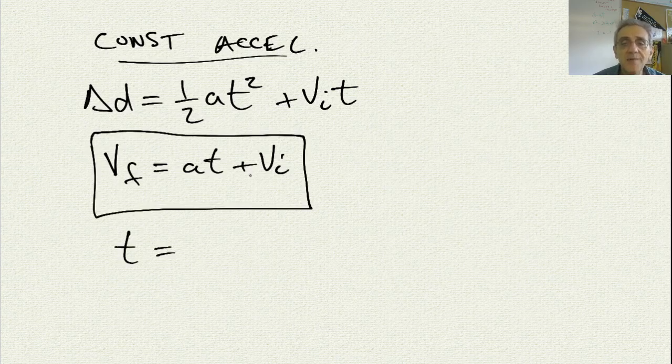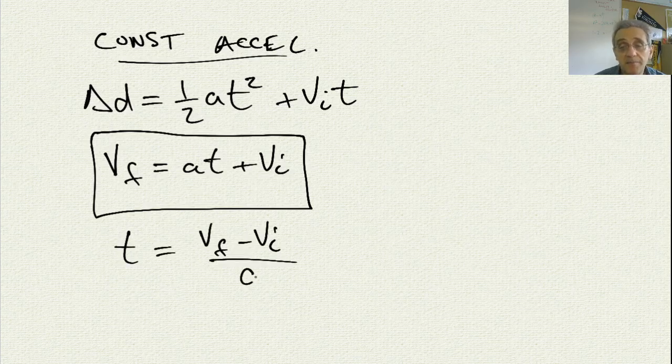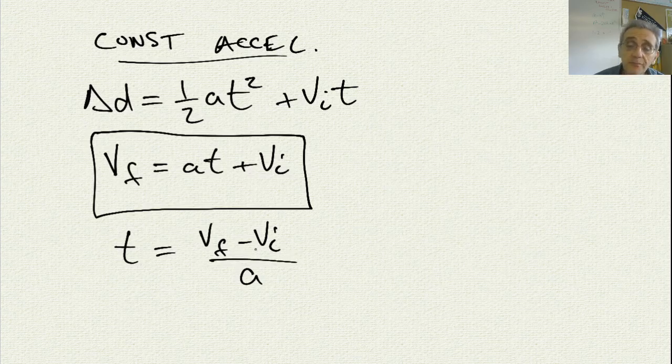So if I say time equals, I'm going to take the vi, take it to the other side. I'm going to get v-f minus vi. And then I'm going to divide both sides by a. And so now I have an equation for time in terms of the other variables.